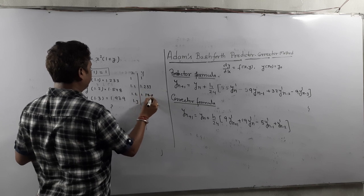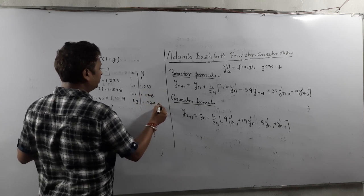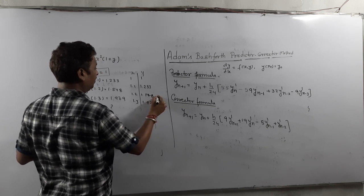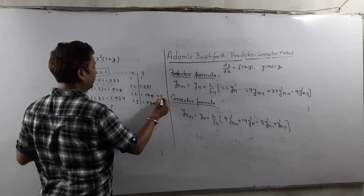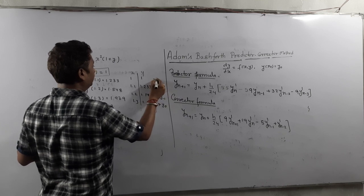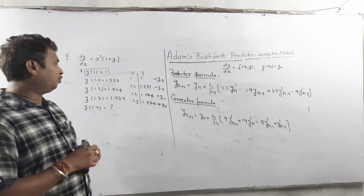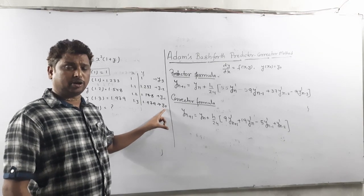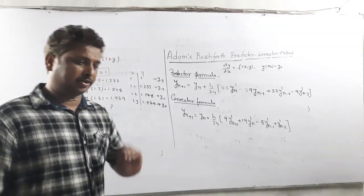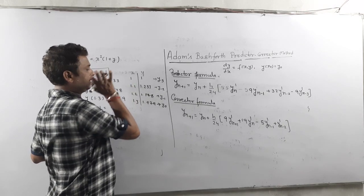The last value, y at 1.3 = 1.979, is your y0. The previous value before that is y(−1), the one before is y(−2), and the first value is y(−3). So the indexing goes from the last entry backward: y0, y(−1), y(−2), y(−3), and correspondingly x0, x(−1), x(−2), x(−3).